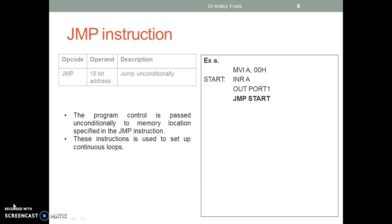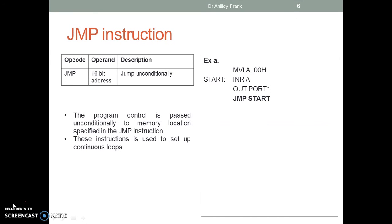JMP instruction — jump unconditionally. The program control is passed unconditionally to the memory location specified in the jump instruction. These instructions are used to set up continuous loops. Example: JMP jumps to label 'start' and repeats the instructions continuously.